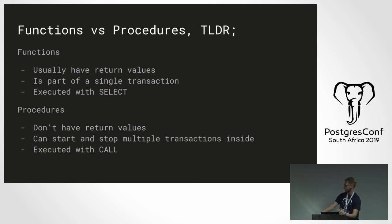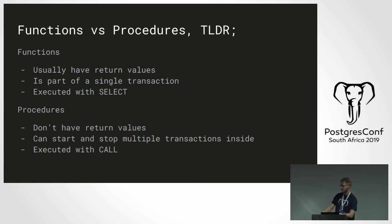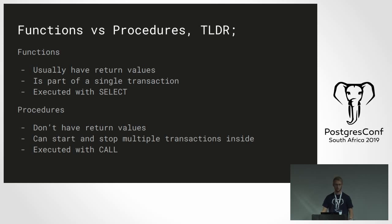In Postgres, we have both functions and stored procedures. The difference is that functions usually have return values when you call them. If such a function does not have a return value, you have to declare it as returning void, whilst procedures don't have return values. Functions are also part of a single transaction when you call them, whilst procedures can actually start and end multiple transactions within them. When calling a function, you use a SELECT operator; with procedures you use the CALL keyword.